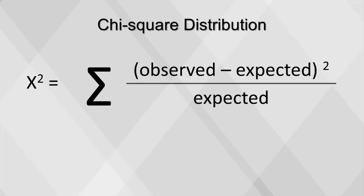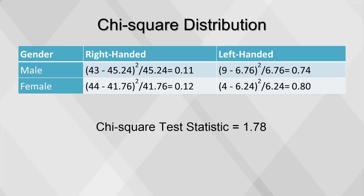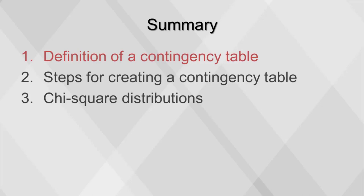If there is an association between two variables, the chi-square test statistic can be used to find which values contribute most to the association. For each cell, subtract the expected value from the observed, square the result, and divide by the expected value. Each of these results is summed (indicated by the Greek letter sigma). In this example, the calculations for left-handed people are much greater than those for right-handed people, indicating these cells have the greatest impact on the potential association. Summing the values results in a chi-square test statistic of 1.78. This value is used with the chi-square distribution, along with degrees of freedom based on the number of values for each variable and a significance level such as 0.05, to obtain the p-value.